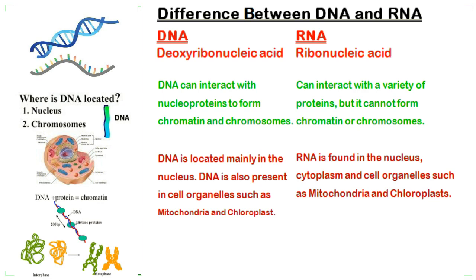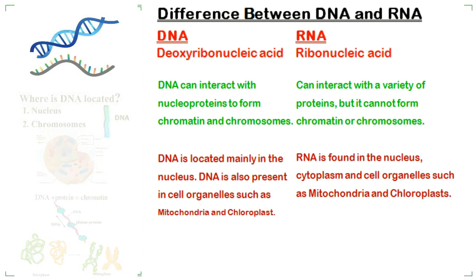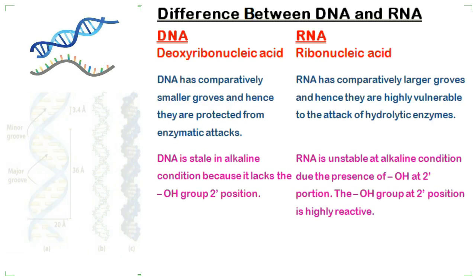DNA is located mainly in the nucleus, and is also present in cell organelles such as mitochondria and chloroplasts. While RNA is found in the nucleus, cytoplasm, and cell organelles such as mitochondria and chloroplasts.